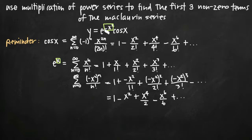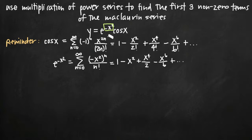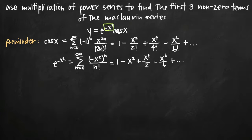That's the power series expansion of e to the negative x squared. Now we need to use power series multiplication to find the Maclaurin series expansion of the full function. The reason we use power series multiplication is because we have e to the negative x squared multiplied by cosine of x, and both are well-known Maclaurin series. Multiplying their power series expansions gives us the Maclaurin series of the function as a whole.